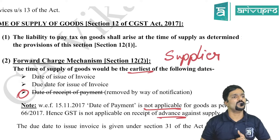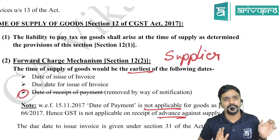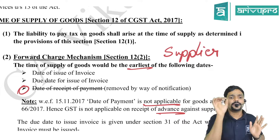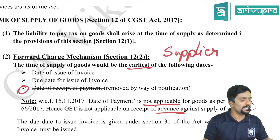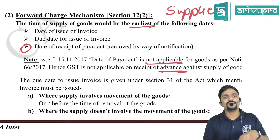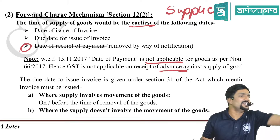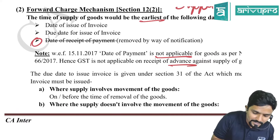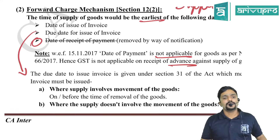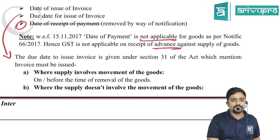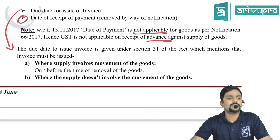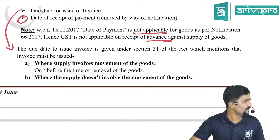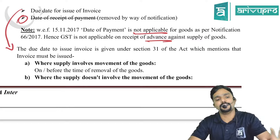The due date to issue invoice is given in Section 31. So Time of Supply depends on the due date to issue invoice, and that due date is given in Section 31. We have to connect these two sections — time of supply depends on the due date to issue invoice which is given in Section 31.